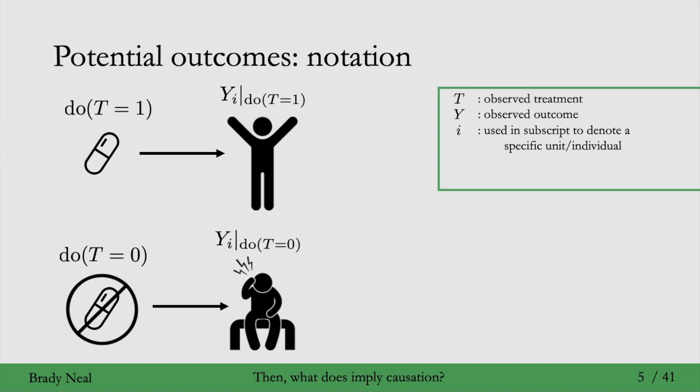This notation is a bit cumbersome, so we'll use a much simpler notation. We have YI(1) to denote the potential outcome I would observe if I were to take treatment, if T equals one. The one means if I were to do T equals one. Similarly, YI(0) is the potential outcome I would observe if I were to not take the treatment, if I were to not take the pill. The zero similarly is just for do T equals zero.